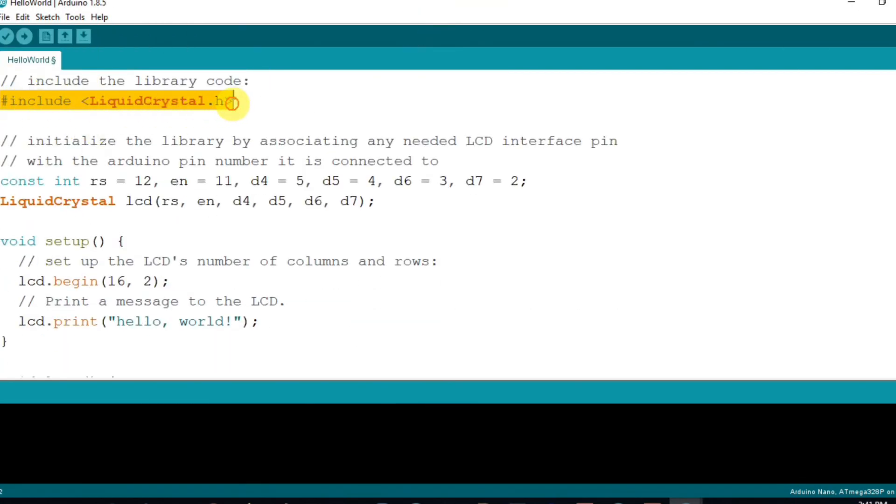Here, include LiquidCrystal.h is the header line of the library. Next, initialize the Arduino pins that are connected with LCD. Here, I am changing the pin numbers according to my circuit schematic.